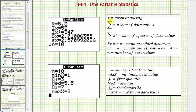X bar equals the mean or average. The sum of X equals the sum of the data values. The sum of X squared equals the sum of the squares of the data values. SX is the sample standard deviation. Sigma X is the population standard deviation. N equals the number of data values.